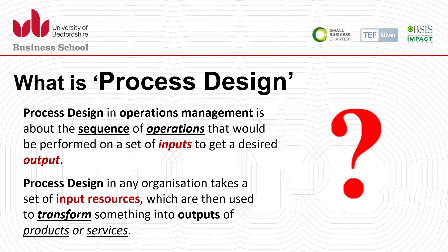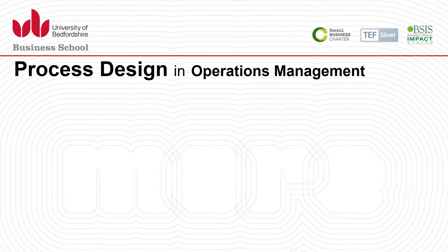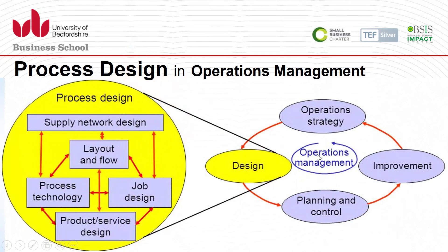There are a number of categories of process design — analytical, experimental, or procedural — that can be used to differentiate types of process design. Operations management is a broader concept that runs the business day in and day out. It includes important elements such as operation strategy for achieving long-term objectives, and planning and control to make the best or optimum use of resources.